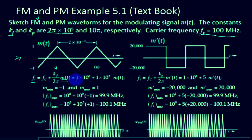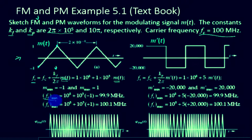Simplifying, we have 1 times 10 to the power of 8 plus 1 times 10 to the power of 5 times the message signal. The maximum and minimum values of M of t are plus 1 and minus 1. So the instantaneous frequency will similarly have a minimum and maximum value, corresponding to the minimum and maximum of the message signal.